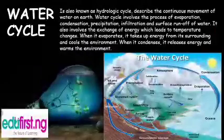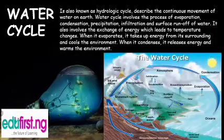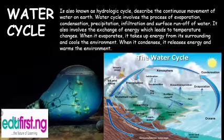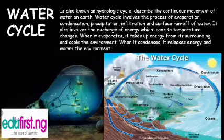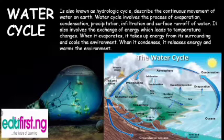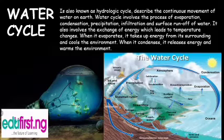Lastly, we have the water cycle, also known as the hydrologic cycle. It describes the continuous movement of water on earth. The water cycle involves the processes of evaporation, condensation, precipitation, infiltration, and surface runoff. It also involves the exchange of energy which leads to temperature changes — when water evaporates, it takes up energy from its surroundings and cools the environment, and when it condenses, it releases energy and warms the environment.